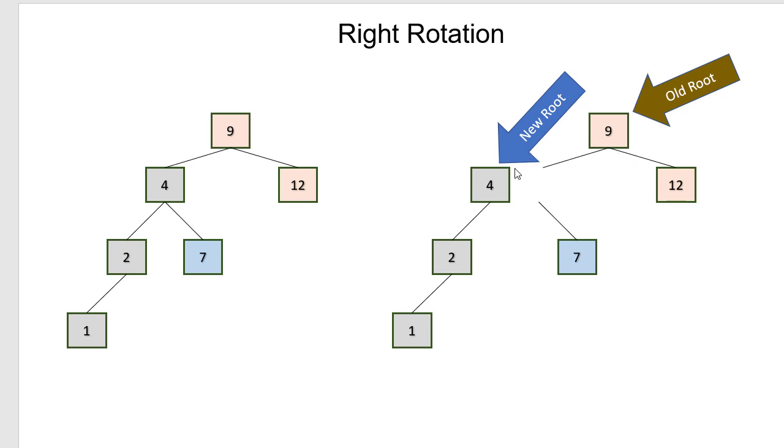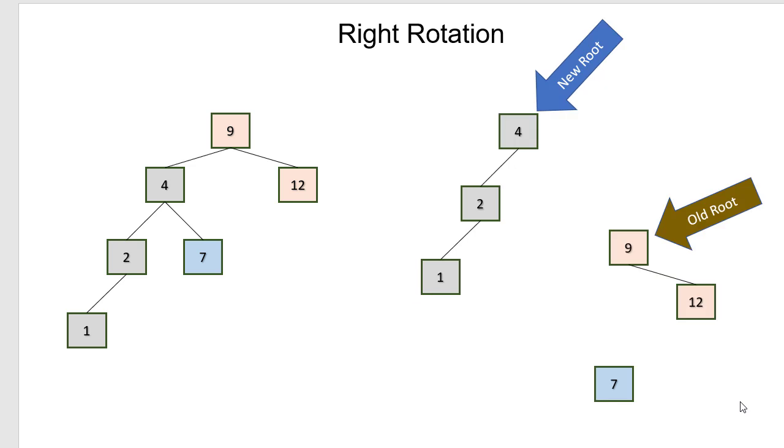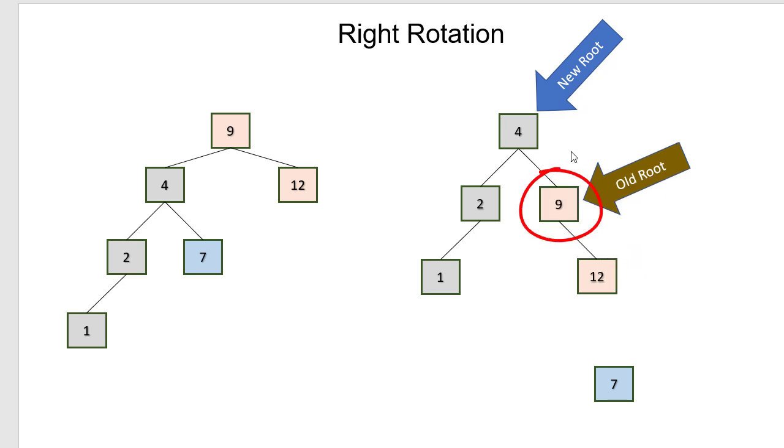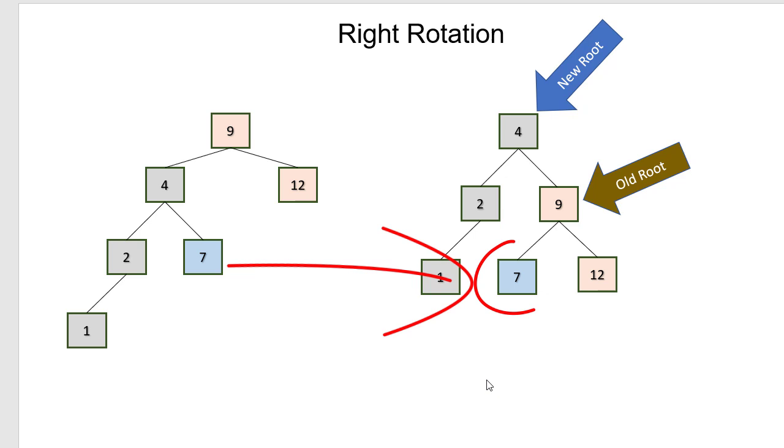So as a reminder, nine is the old root and four is going to be our new root once we've rotated the tree. So I'm going to bring four up to the top since it's going to be the new root. Then the new root's right child is going to be the old root, which, as you'll remember, is still attached to its right subtree. Then we have seven, which, as you'll remember, was the new root's old right subtree. And we make that the left subtree of the old root.